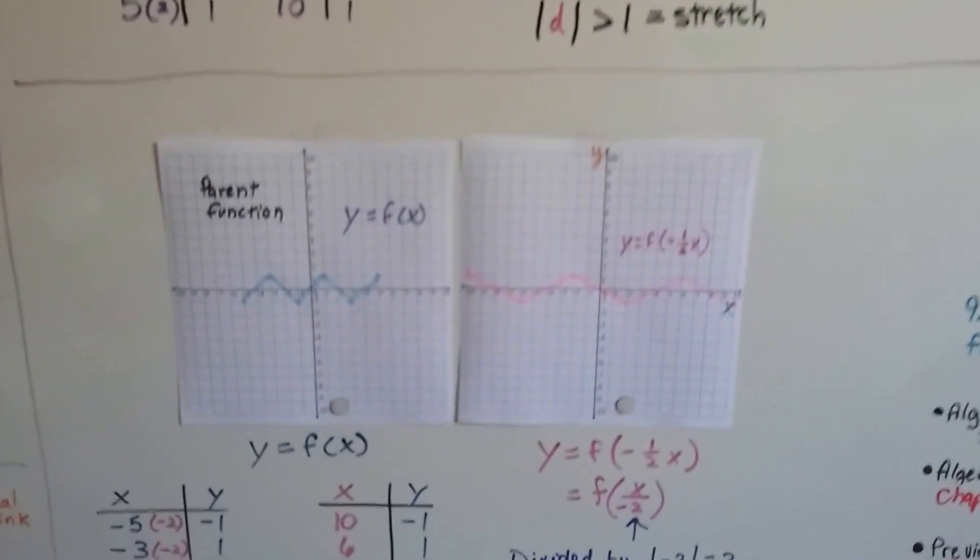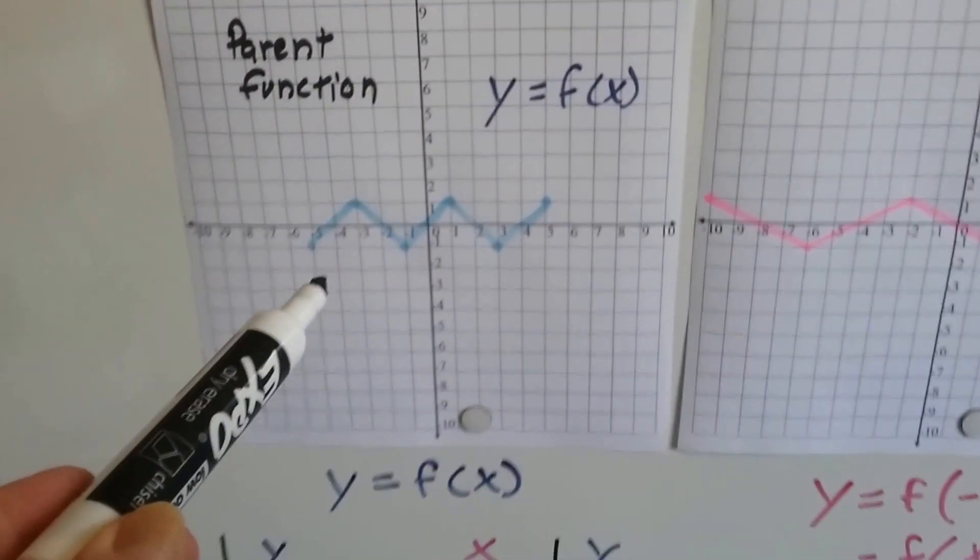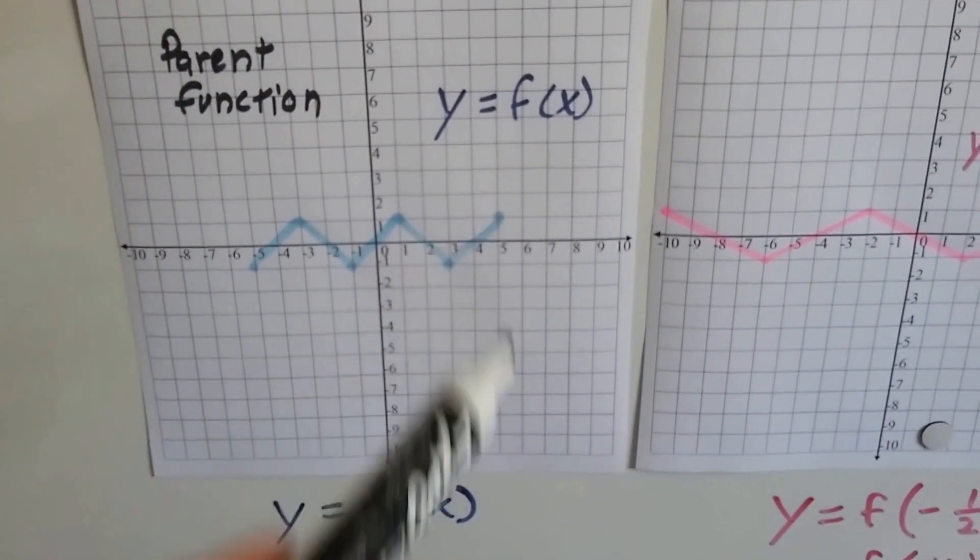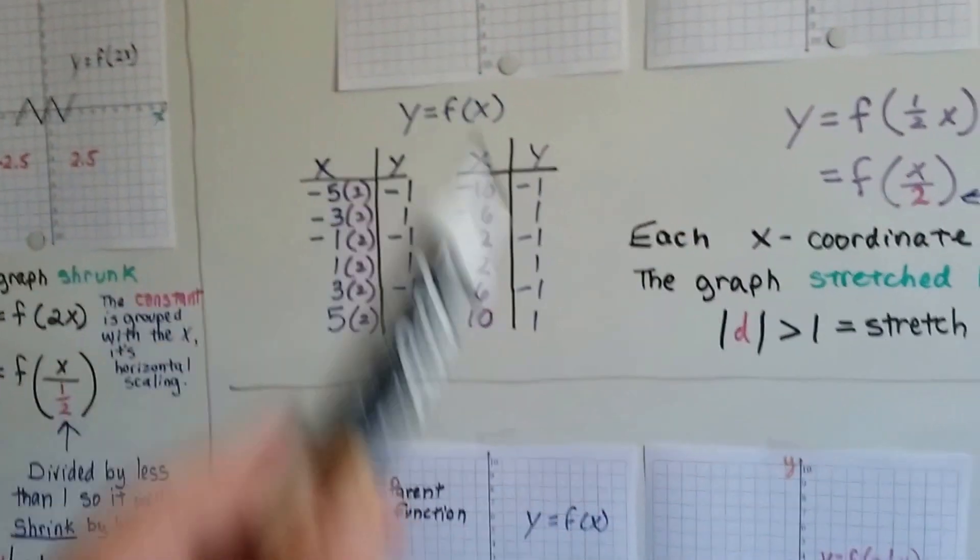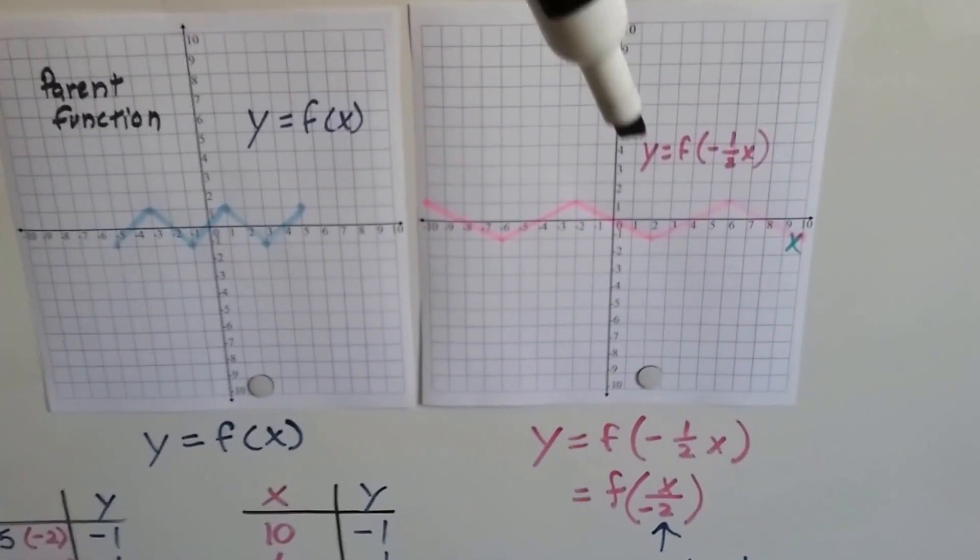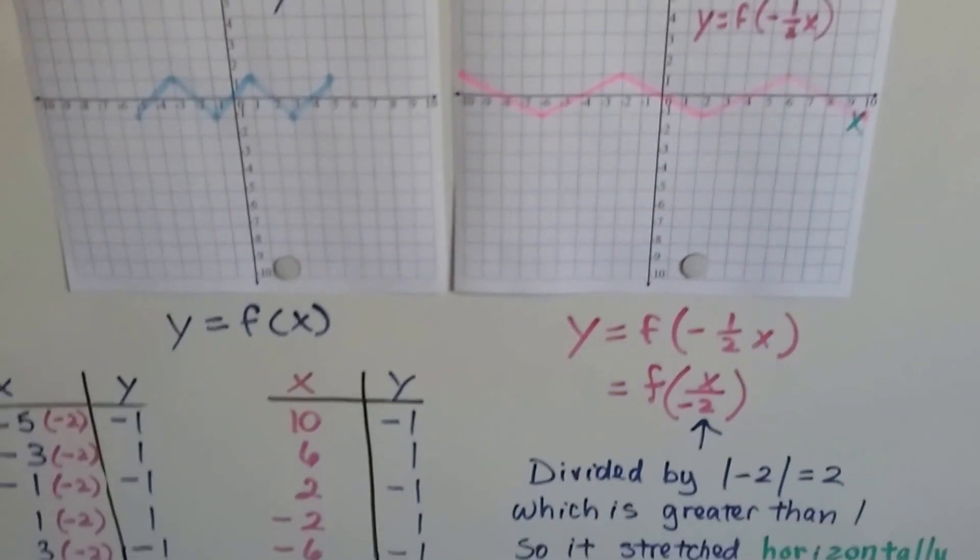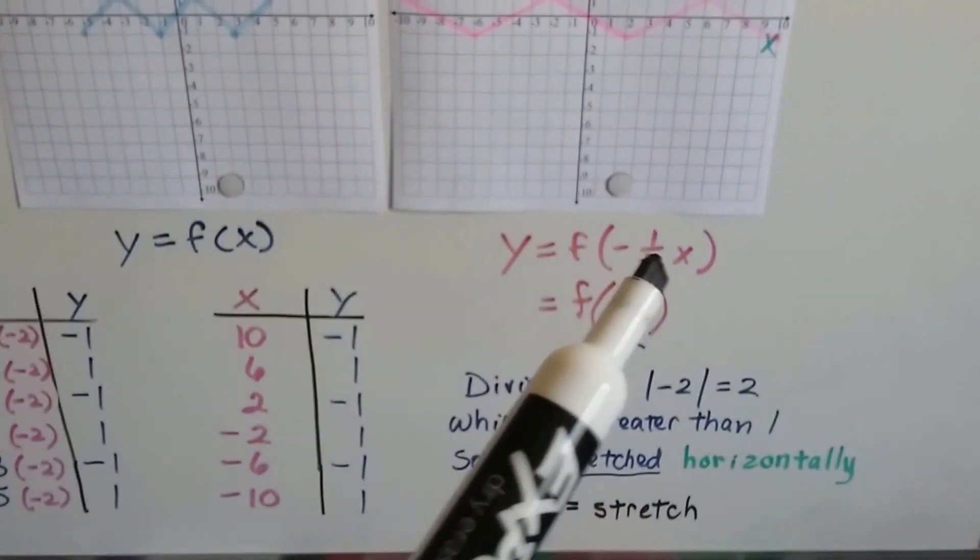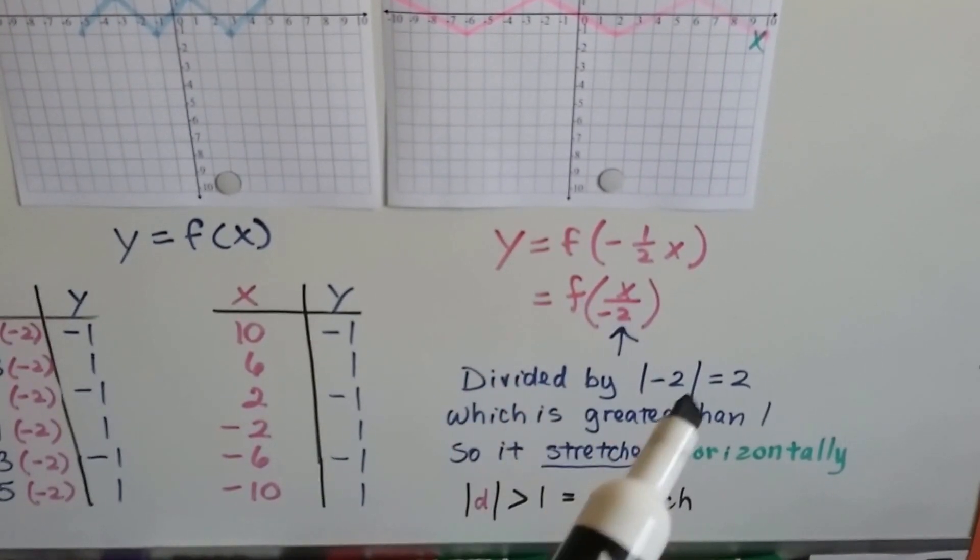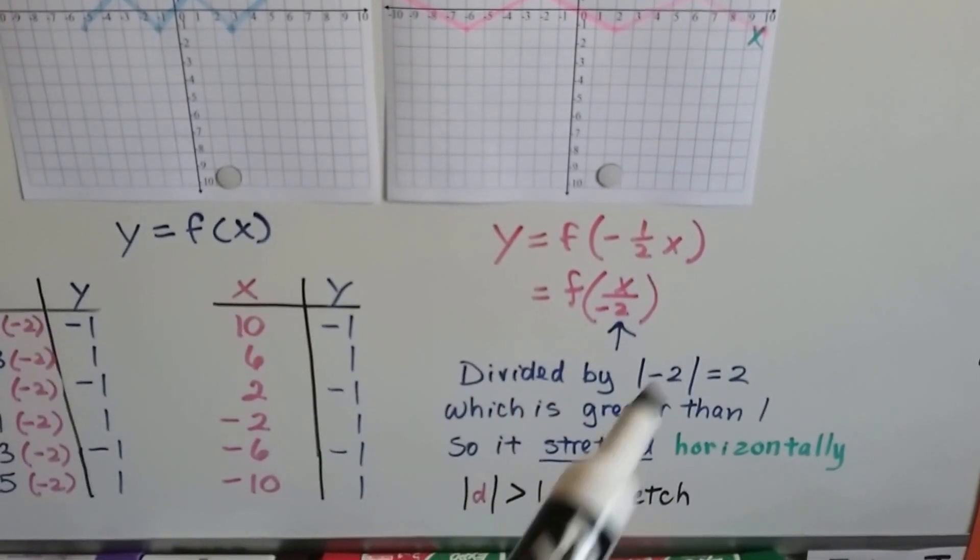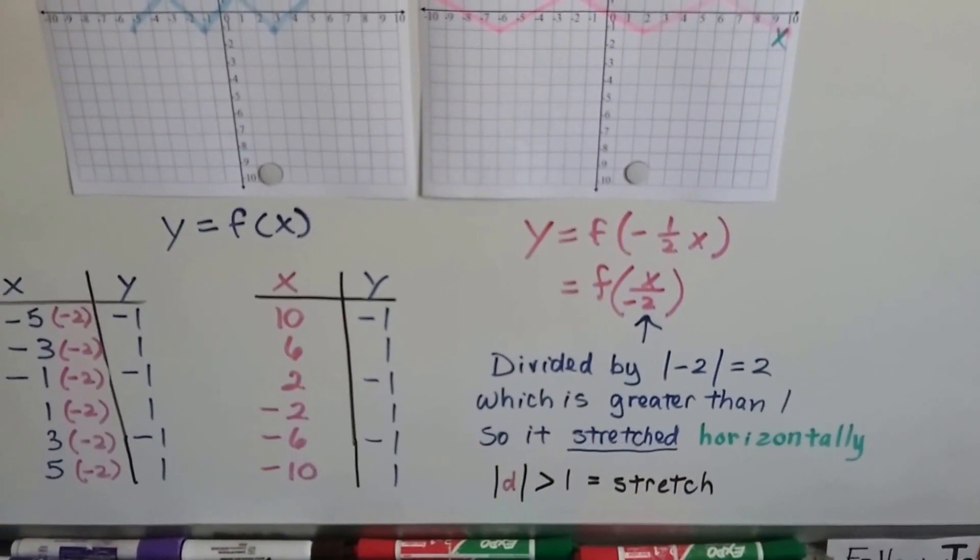All right, let's take a look at this one. Here's our parent function. We've got y equals the function of x. And when you look at it, it's the same one, negative 5 on this end, 5 on that end. It's the same ones as we did over here and up there. But now we've got y equals the function negative half times x. So what happens is we've got x divided by a negative 2. And this is actually, we're going to use the absolute value. So we've got a 2, so that's greater than 1, so it's going to stretch horizontally.